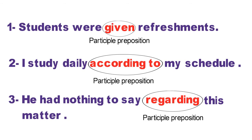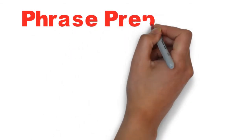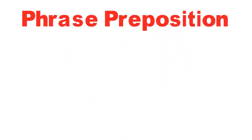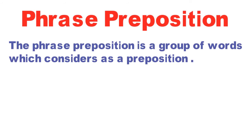Ab hum dekhenge fifth and the last one, types of preposition, jo ki hai phrase preposition. Aiye ise bhi define karte hain. The phrase preposition is a group of words which is considered as a preposition. Yani phrase preposition shabdon ka ek samuh hota hai, jinhe ek preposition ki tarah hi maana jata hai. Phrase preposition mein ek se adhik shabdon ka upyog kiya jata hai, aur zaroori nahi hai ki aane wale sabhi shabd preposition hi ho — unmen kuch anya shabdon ka bhi prayog kiya jata hai — aur ek single preposition ki tarah weh consider kiye jate hain.